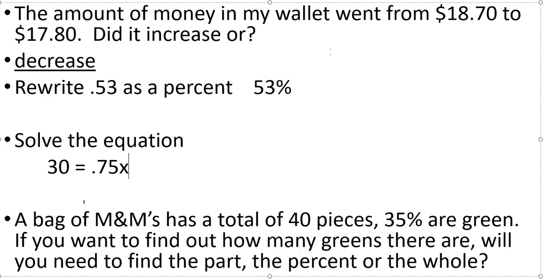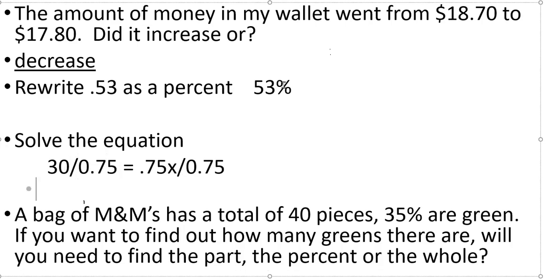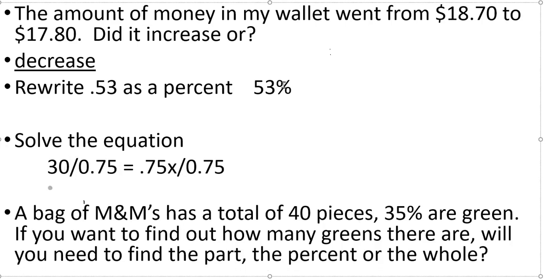Solve the equation: 30 equals 0.75x. I'm going to divide both sides by 0.75. 30 divided by 0.75 is 40, and 0.75 divided by 0.75 is 1, so 1x, which is just x. The answer is 40.